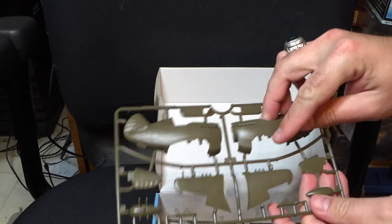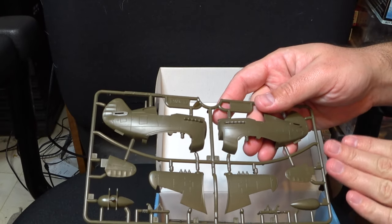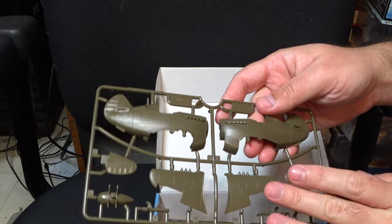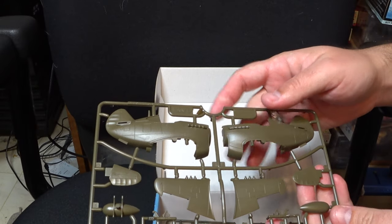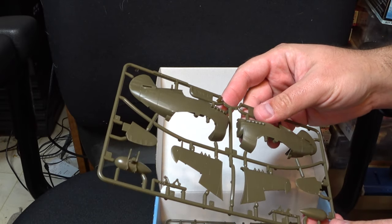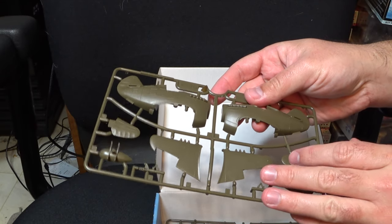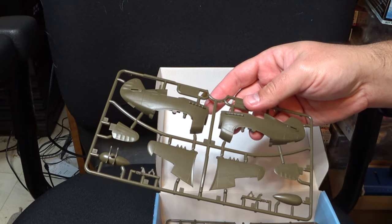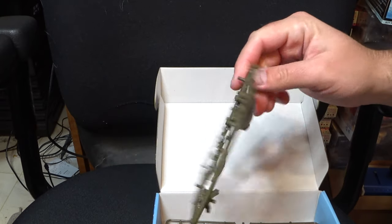Next up, we've got more of the meat of the kit with our two fuselage halves, our upper wing halves, and two parts of the tail, the drop tank, and the landing gear. Now interestingly enough, they've got the ailerons as separate parts. That was a little bit interesting choice there.